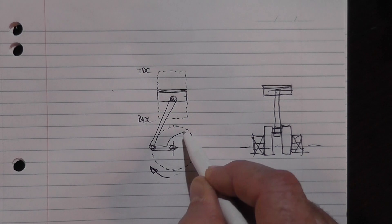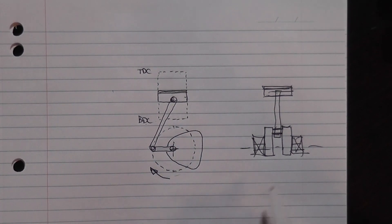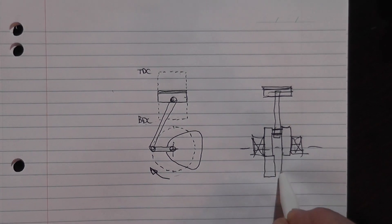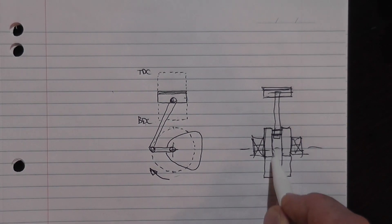So it roughly could look like this and that they would sit, they actually, there's usually, there would be two of them and they would sit on the ends of these webs here of the crankshaft.